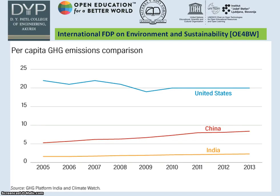This graph gives you the per capita greenhouse gas emission. From the graph you can see that for the last 10 years, India's increase is very negligible. But India has to work upon reducing this per capita greenhouse gas emission, which has not been done so far.